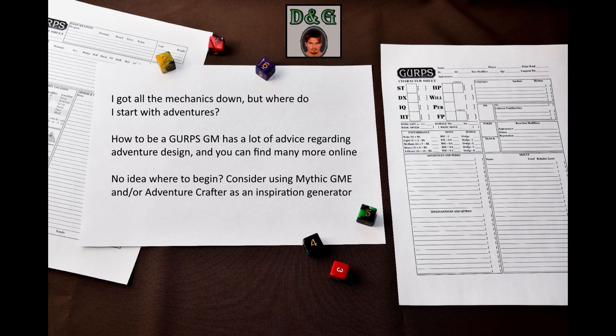There's tons of GMing advice online in the form of books, articles, and blog posts, and there are many styles of GMing. 'How to be a GURPS GM' actually has an interesting chapter on adventure creation that might be useful to new GMs, so I highly recommend you read it. If you are struggling with coming up with the actual plotline, consider getting the Adventure Crafter. This system-agnostic book is a good GMing aid. It can even be combined with Mythic GM Emulator for solo games. This is how I ran my previous adventure, so I'd like to try it again.